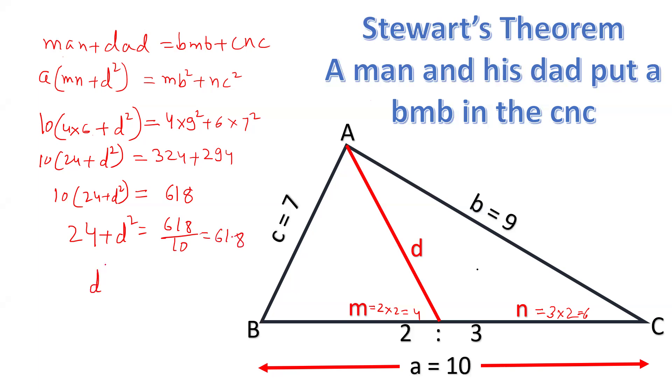So the value of d² is 61.8 minus 24, and that gives me 11 minus 4 is 7, 5 minus 2 is 3, 37.8 is the value of d².